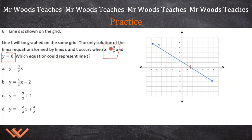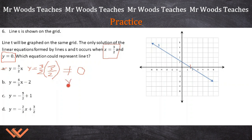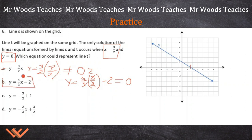Let's work these equations. All we have to do is input x, which is 3 halves, into these here. So y equals 3 halves, and x is 3 halves. That does not equal 0 because 3 times 3 is 9 and 2 times 2 is 4 — it's not 9 fourths, so I'm not even going to finish that one. Let's look at the next one: y is equal to 4 thirds times x, which is 3 halves, minus 2. Does that equal 0? I know that 3 and 3 is 1, and 2 goes into 4 two times. So I have 2 minus 2 — that does equal 0. So this is a solution for line t.